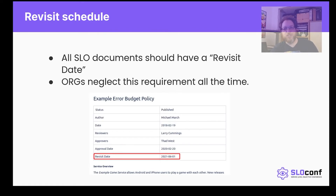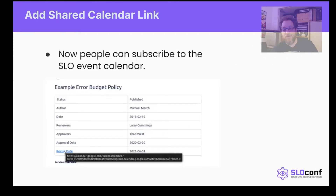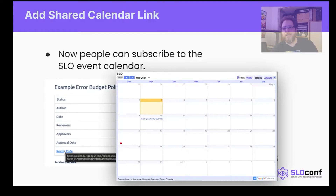What we're going to do is take an existing shared calendar — for our organization we have an SLO shared calendar — and take that URL and embed it in this document. When you click on it you can see the shared calendar with all the events. People can see the calendar, subscribe to it, and it makes the document more relevant by linking not just the policy but links to the enforcement.